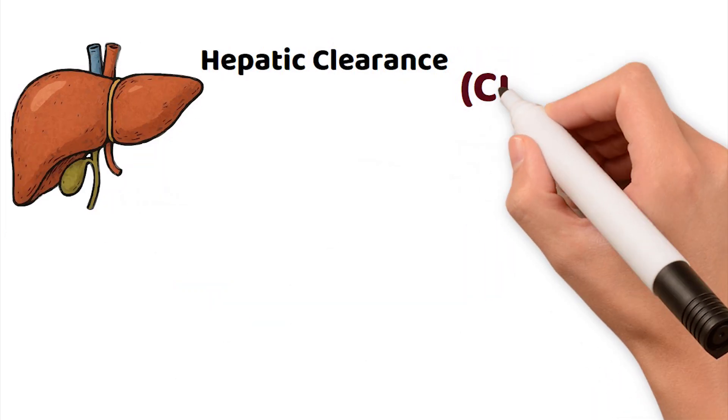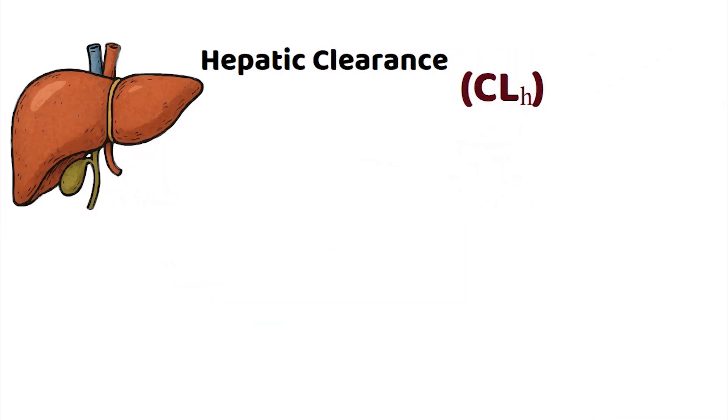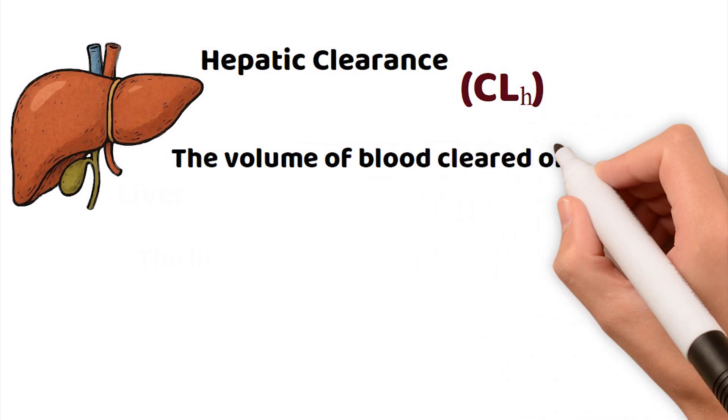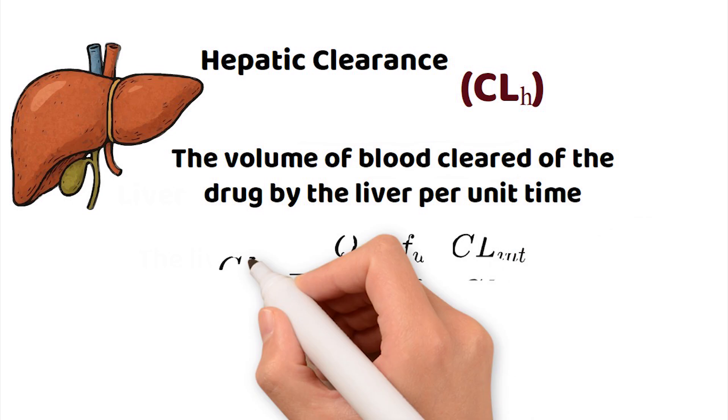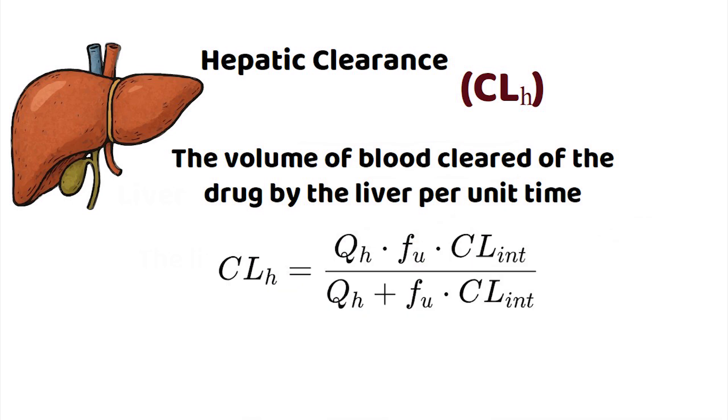Pharmacokinetically, hepatic clearance is defined as the volume of blood cleared of the drug by the liver per unit time. To understand this, we use the well-stirred model, which describes hepatic clearance as in this equation.